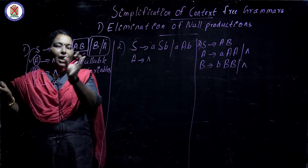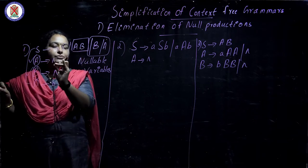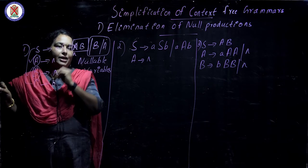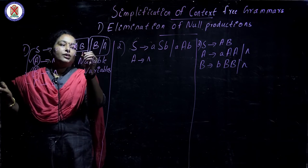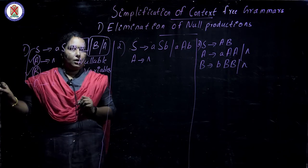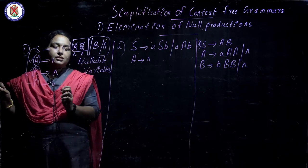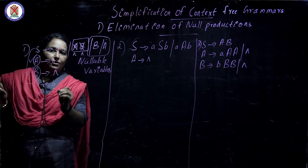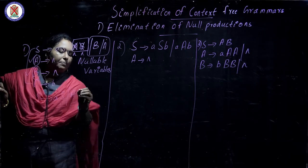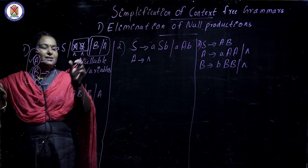To remove a null production, look at the right-hand side productions where the nullable variables appear. You must take the production with A and B as a whole, and then eliminate A first — since A derives null, A can be treated as null and removed. Then consider B as null and eliminate B as well.